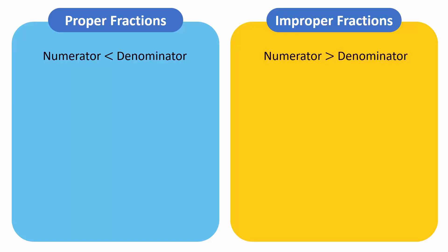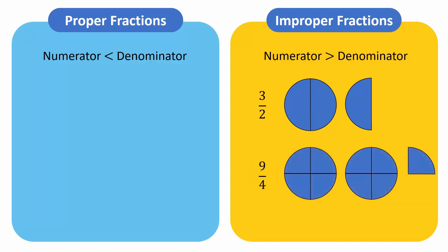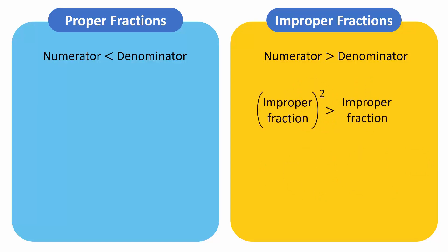Consider the improper fraction 3 over 2, which can be represented visually like this. The perfect square of this fraction can be calculated by squaring the numerator and the denominator, which will give us the fraction 9 over 4. We can see that 9 over 4 is greater than 3 over 2. In fact, the square of an improper fraction is always greater than the improper fraction itself.